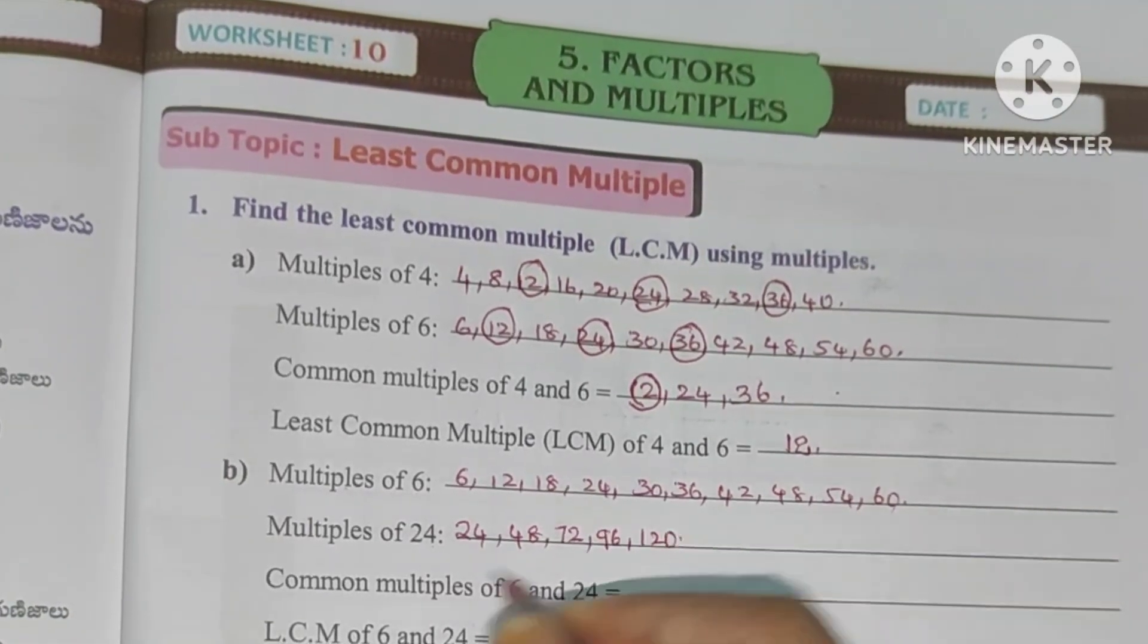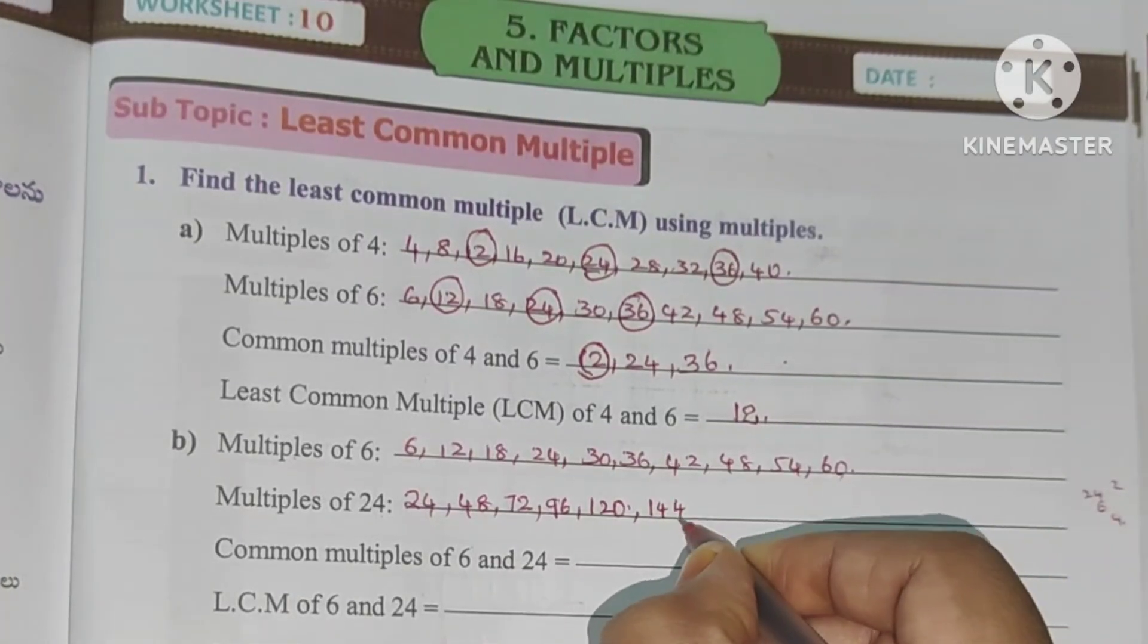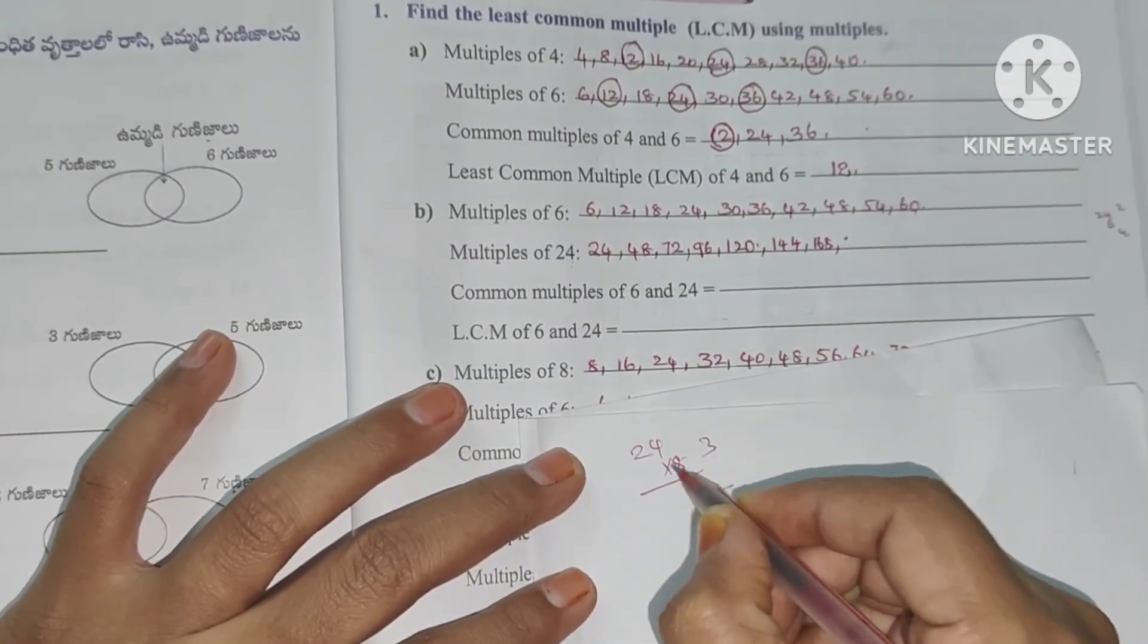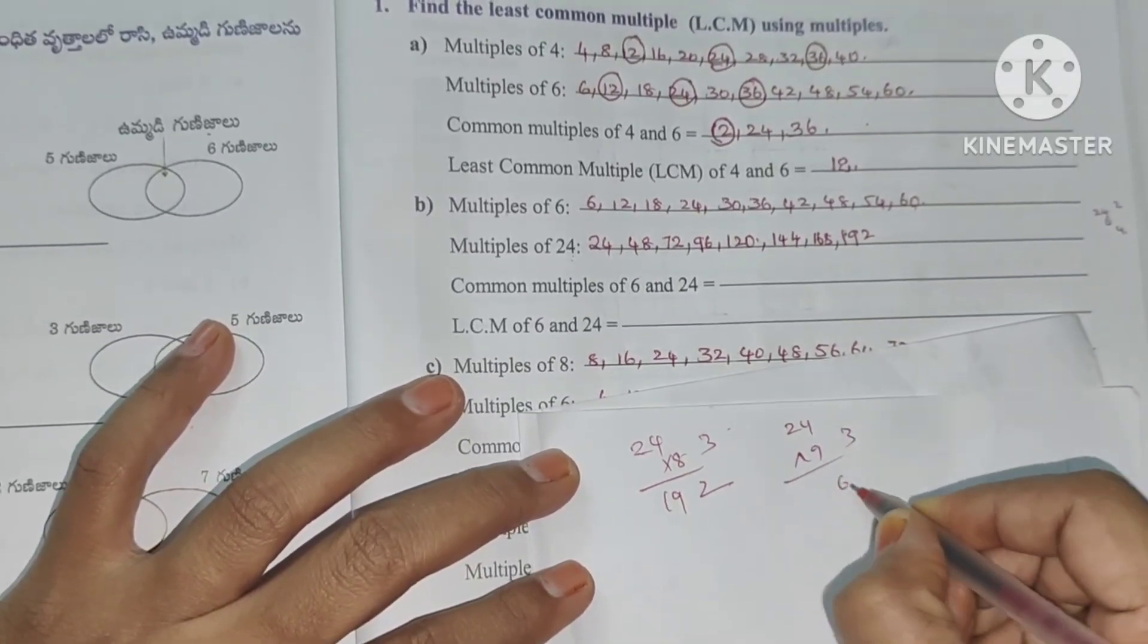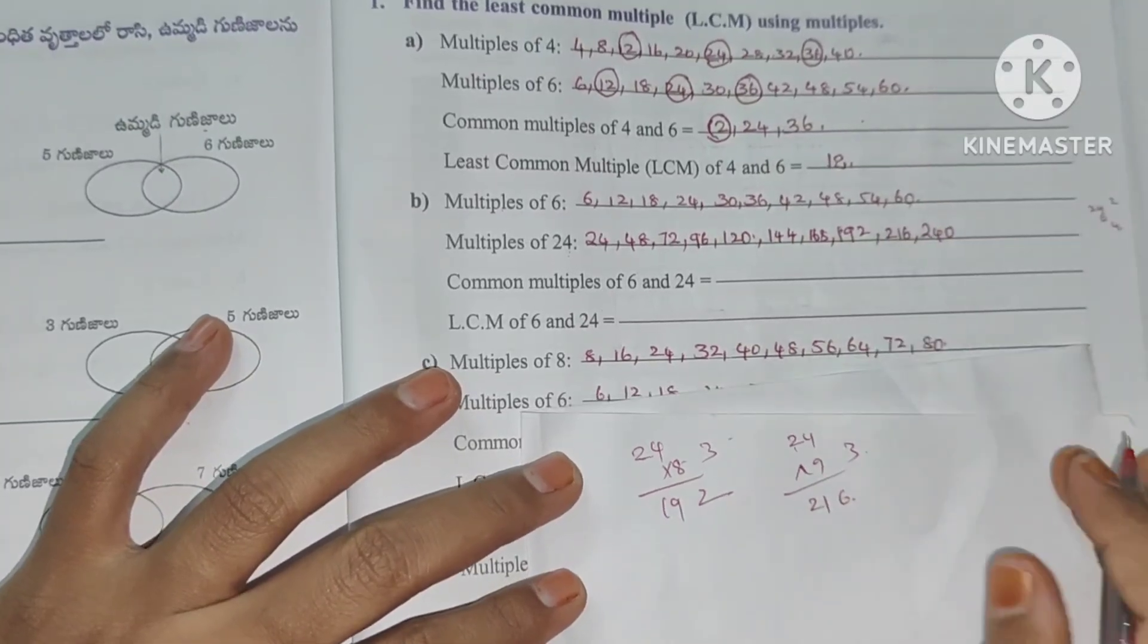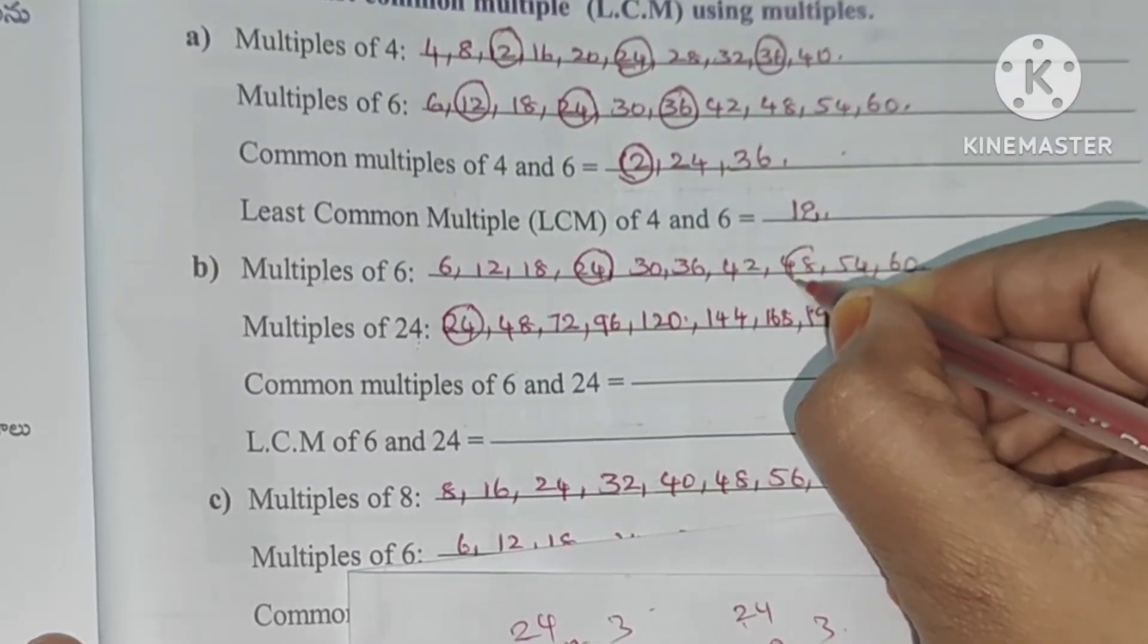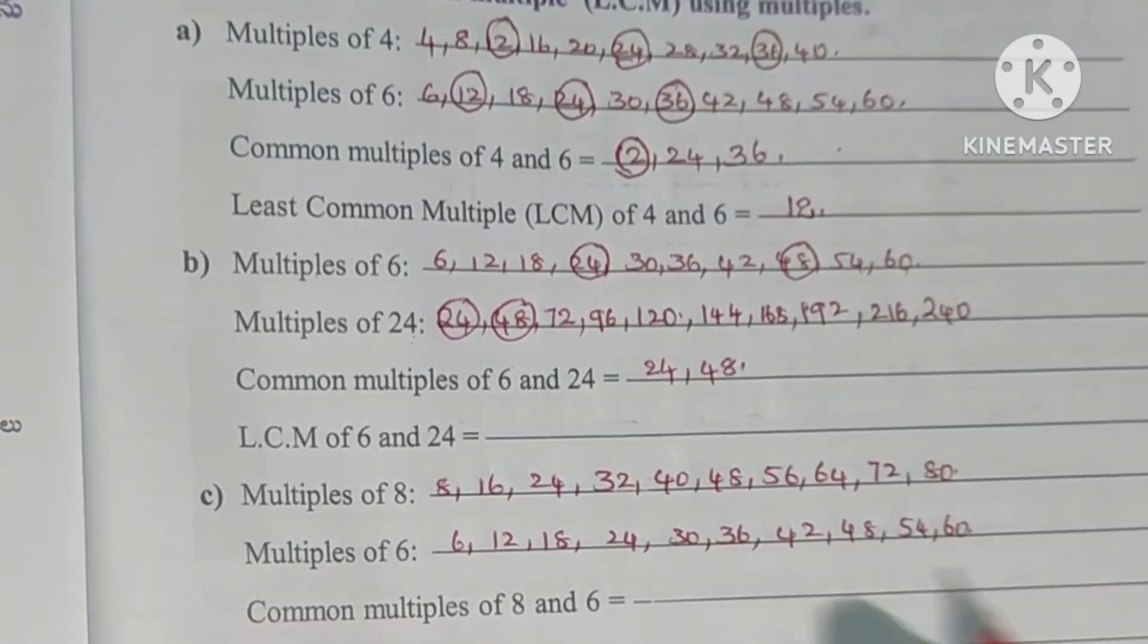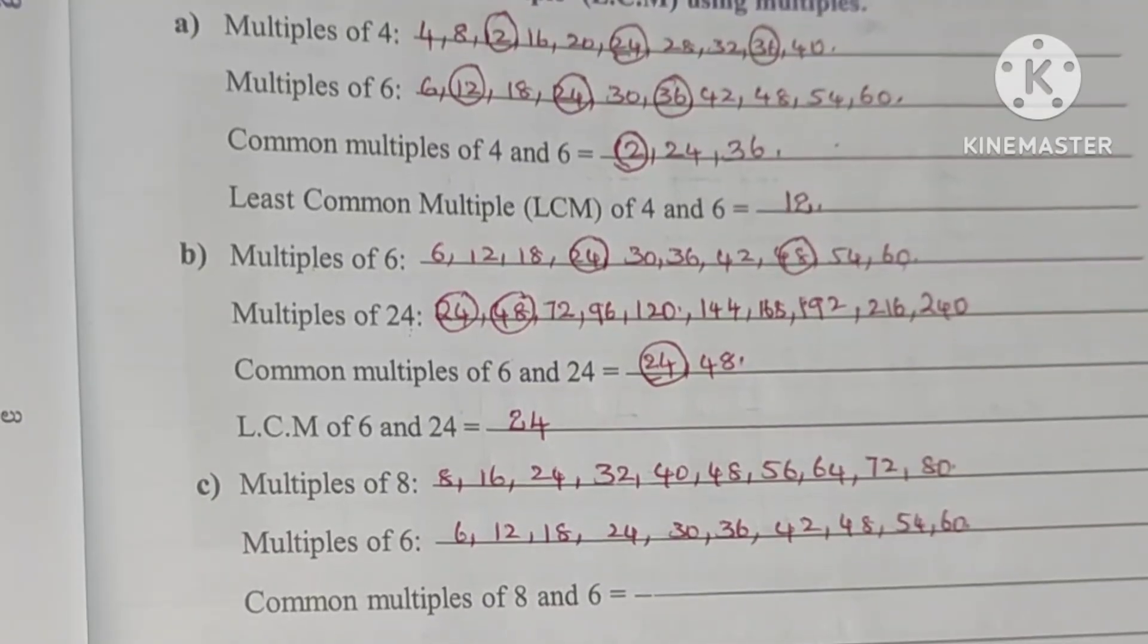24×1=24, 24×2=48, 24×5=120, 24×6=144, next 168, 24×8=192, 24×9=216, 24×10=240. So here we have common 24 and 48. The least is 24, so LCM is 24.